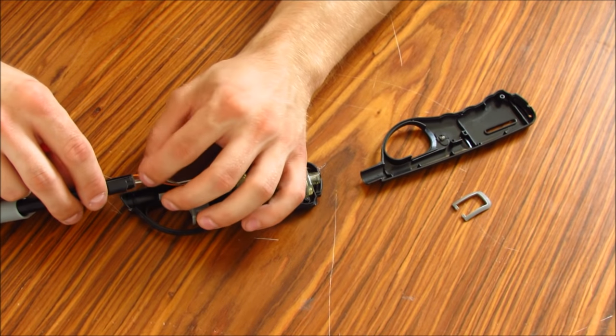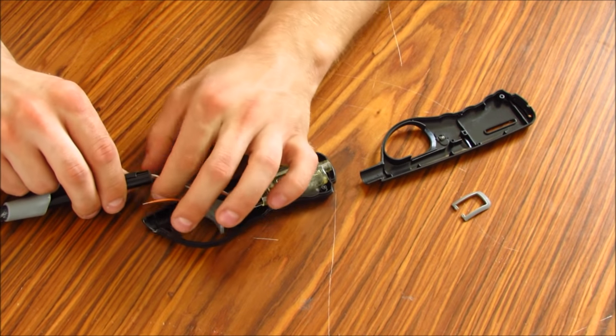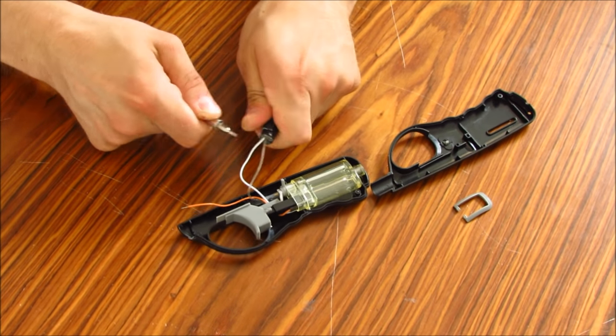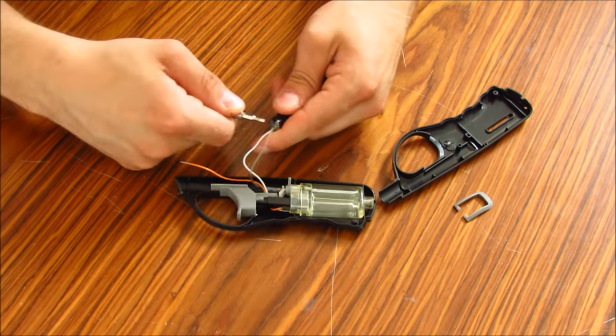What we need from this barbecue lighter are these wires and a gas pipe that's in there. It's a bit tricky to get it out of this tube, which we're going to use later.